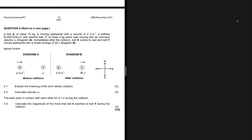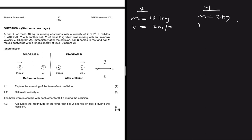Question 4 says ball X has a mass of 10 kg and is moving eastwards with a velocity of 2 meters per second, so we take eastward as positive. It collides elastically with another ball Y of mass 2 kg, which was moving with an unknown velocity VY.